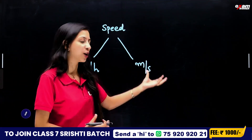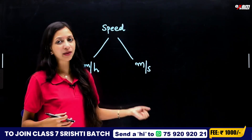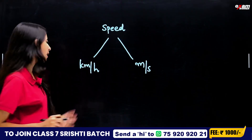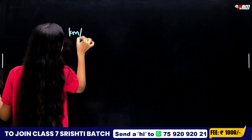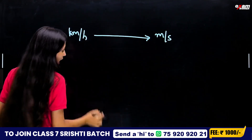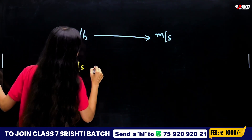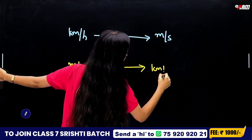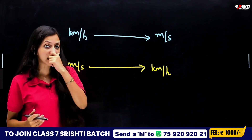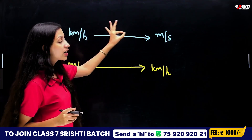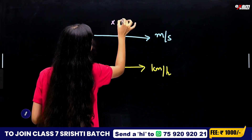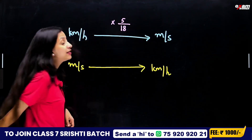The distance is 1 meter — how do we find the time? We can see how we can convert. 1 km per hour equals certain units in meters. If we need to convert the unit, then we need to do unit conversion. We multiply the speed by 5 by 18 to get meters per second.